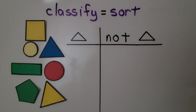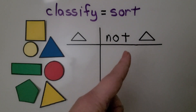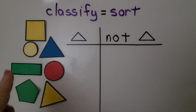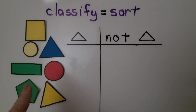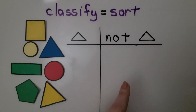We can classify objects by their shape. Here we have a set of triangle and not-triangle. We can sort these by their shape following the rule that all triangles go on the left and all not-triangles go on the right.